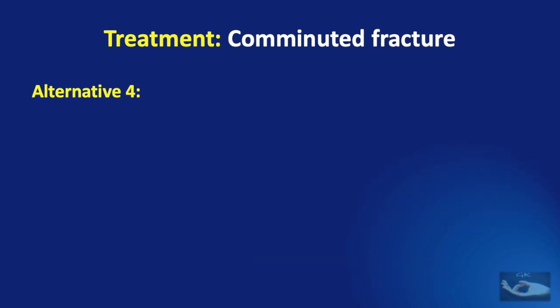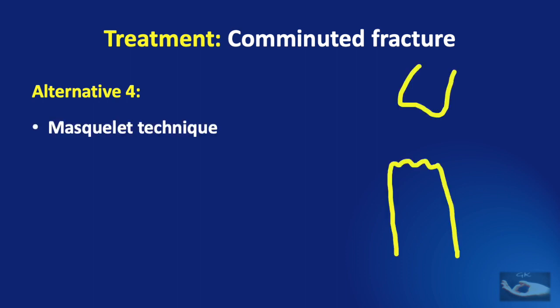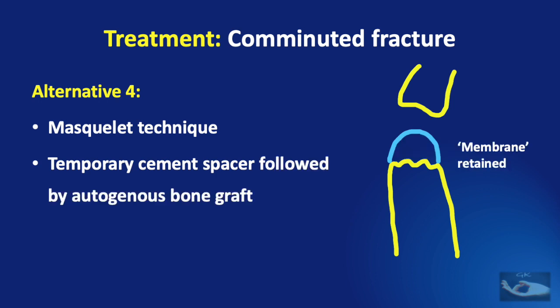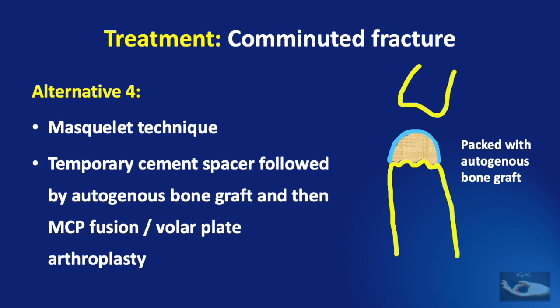The Masculae technique is used when the head of the metacarpal is severely damaged. To replace the damaged and lost portion, a temporary cement spacer is used. After consolidation, the spacer is carefully removed, retaining the membrane that has formed around it, and this cavity is filled with autogenous bone graft. Once the bone graft is consolidated, metacarpophalangeal joint fusion or volar plate arthroplasty can be performed.